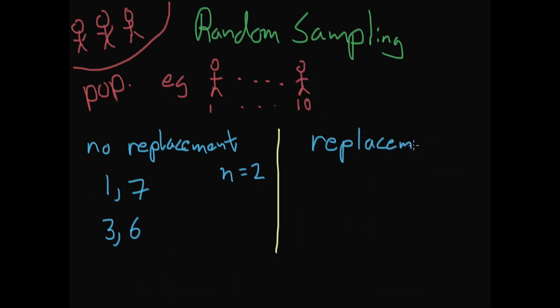This one, as you might guess, is called with replacement. Again, you have a sample size, and so in this case it would be two. I'll go ahead and show you some samples, and you can figure out what's different between them. So for example, one valid sample could be one and seven, and another one might be three and three. Okay, that's kind of interesting.